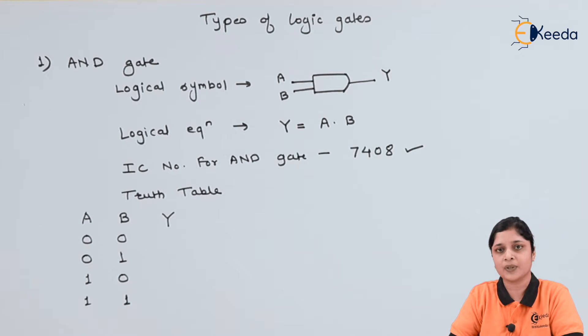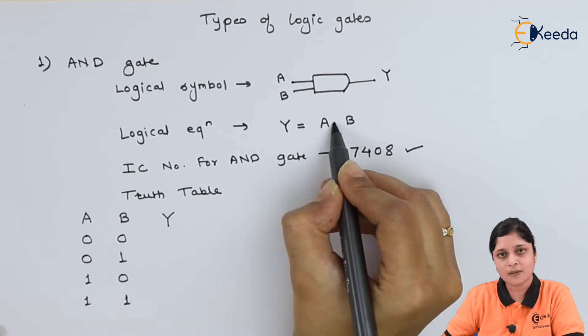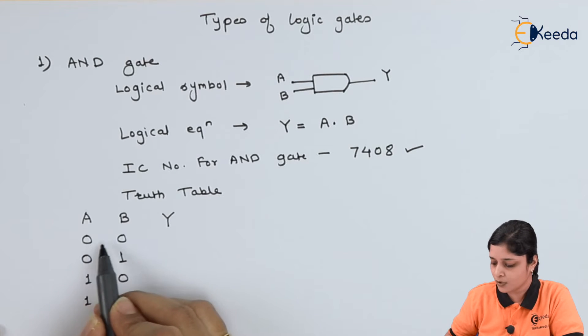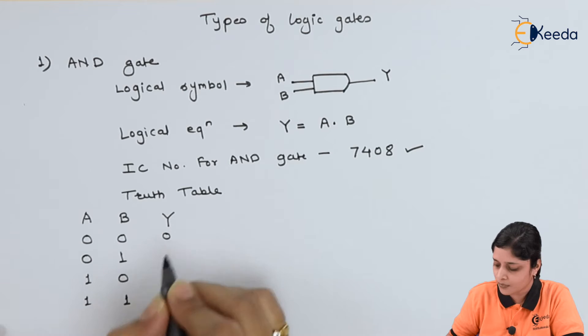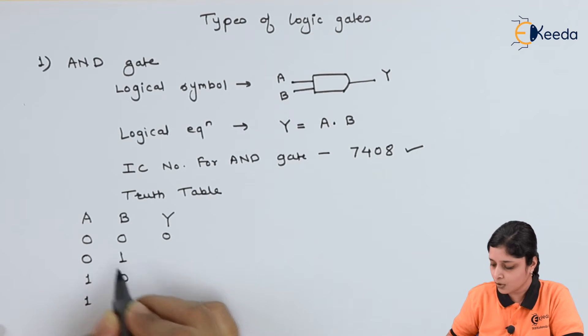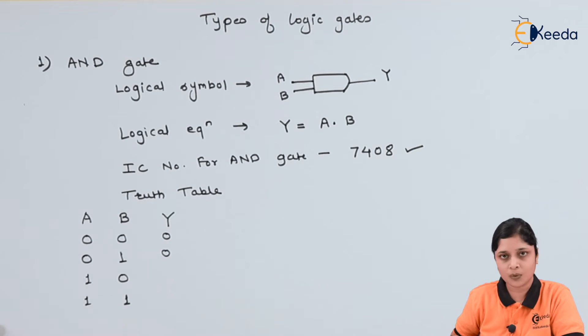And we are going to now calculate its output. This is logical multiplication. So 0 dot 0 will give you always 0. 0 dot 1 will give you 0. Again 1 dot 0 will give you 0. And 1 dot 1 will give you only 1.